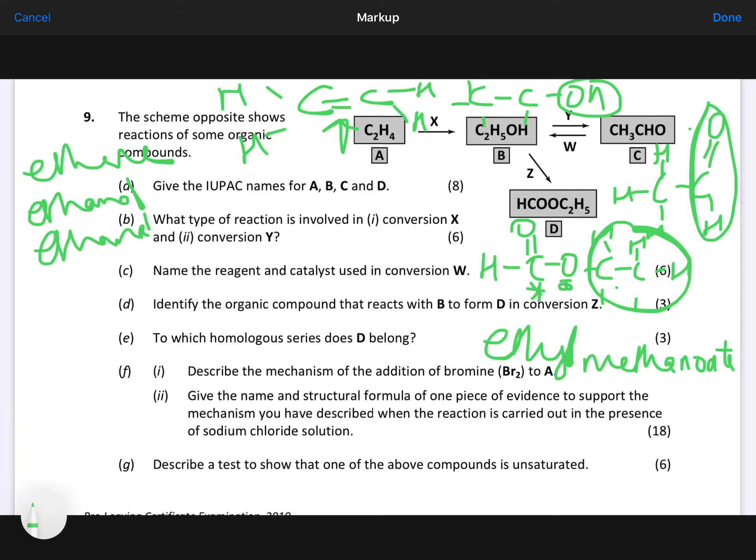So just to go through those again. A is ethene, B is ethanol, C is ethanal, and D is ethyl methanoate. Now, at this stage in your organic revision, you should have a postcard somewhere. And you would say, if it's an alkane, substitution. If it's an alkene, addition.